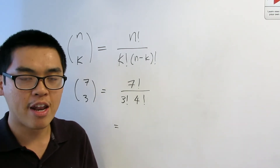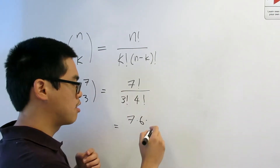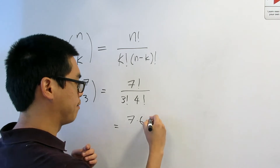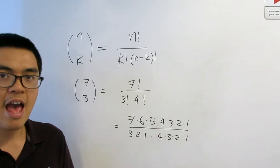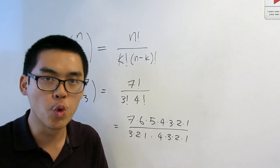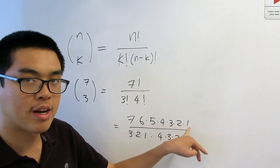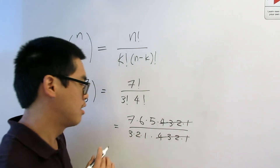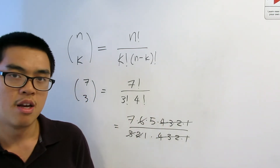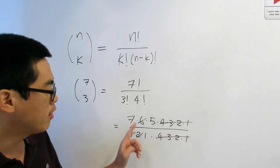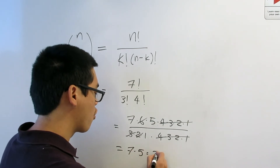Every time you compute N choose K, please don't multiply everything out and divide at the end — you want to do cancellation first. So expand 7 factorial as 7 times 6 times 5 times 4 times 3 times 2 times 1, with 3 factorial and 4 factorial in the denominator. You'll notice 4 times 3 times 2 times 1 appears in both numerator and denominator, so those cancel. Then 3 times 2 in the denominator cancels with the 6 in the numerator. At the end, only 7 and 5 remain on top, giving 7 times 5, which is 35.